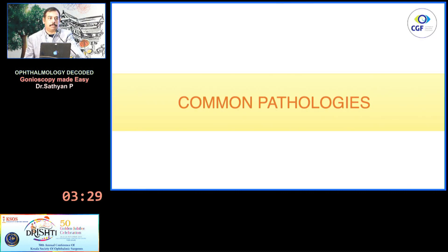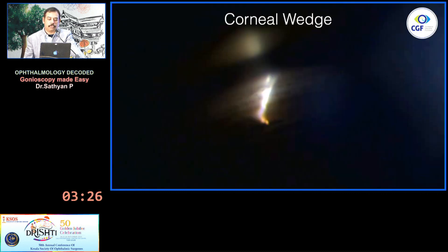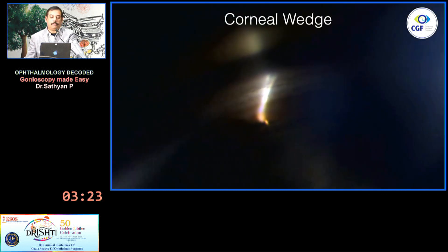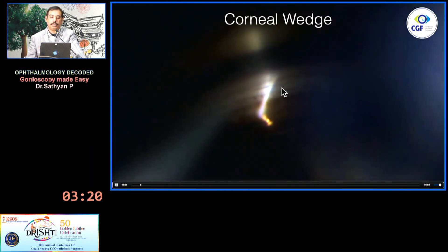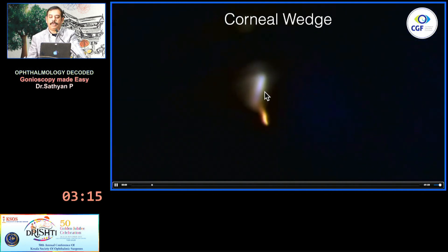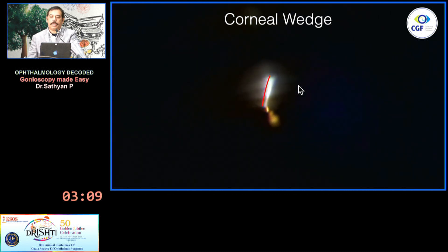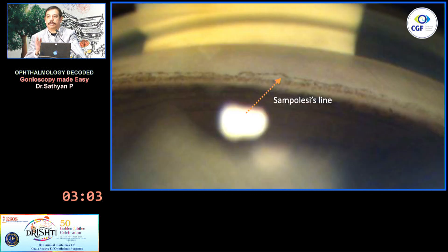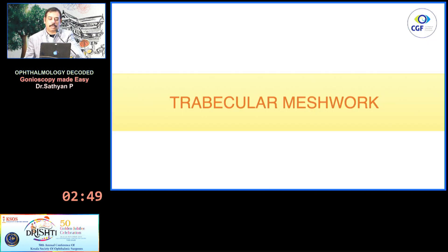I'll share some pathologies in each area. For Schwalbe's line: to identify it, you can see two slit reflections — one in front and one in back. Where they join is the corneal wedge, that is the end of Descemet's membrane, and that is where the Schwalbe's line starts. Identify the Schwalbe's line first so you don't miss a pigmented Schwalbe's line as trabecular meshwork — some people have performed SLT only on the Schwalbe's line. A pigmented Schwalbe's line is otherwise called the Sampaolesi's line in pseudo-exfoliation glaucoma.